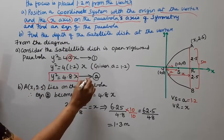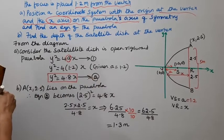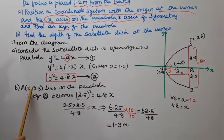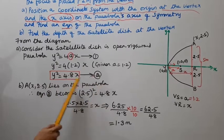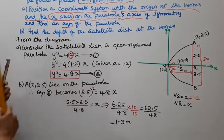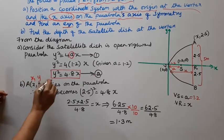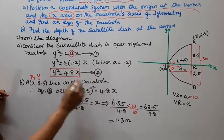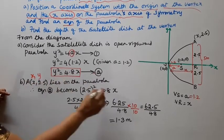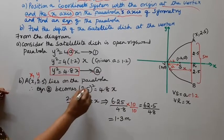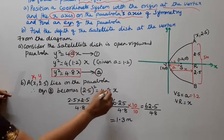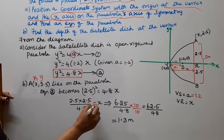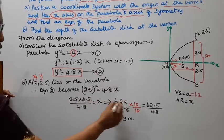This is the second part. The point (x, 2.5) lies on the parabola, since the dish is 5 meters wide, giving a half-width of 2.5. Substituting y = 2.5 into y² = 4.8x: 2.5 squared equals 4.8x, so x = 6.25 divided by 4.8.